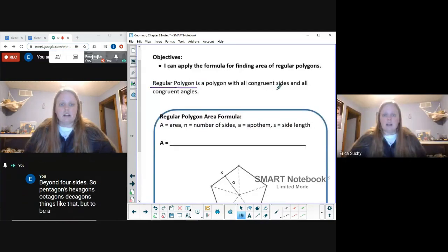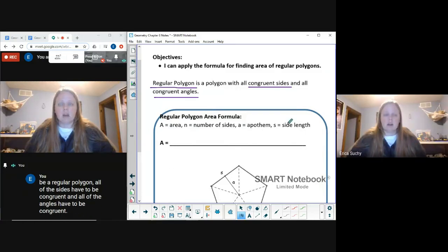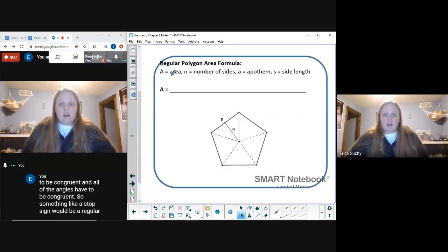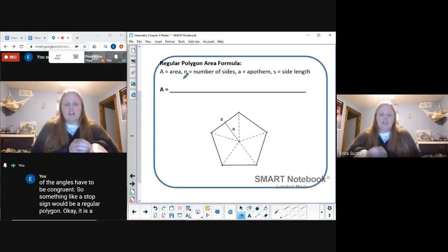To be a regular polygon, all of the sides have to be congruent and all of the angles have to be congruent. So something like a stop sign would be a regular polygon. Okay, it is a complex equation but it's actually really simple.